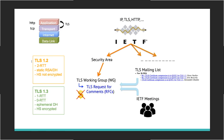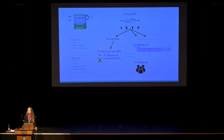TLS 1.3 looks like a rather different protocol, with mechanisms to address previously known weaknesses as well as to reduce latency. The TLS standards are published and worked on by the TLS working group and released as Requests for Comments documents, RFCs. These are publicly available and free of charge, and inputs come from the very active TLS mailing list and from face-to-face meetings held at IETF gatherings throughout the year.